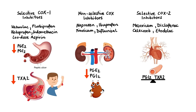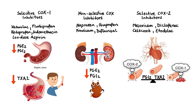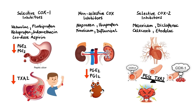Prostacyclin is produced mainly by COX-2 in the endothelium and is responsible for vasodilation and inhibition of platelet activation. On the other hand, thromboxane A2 is produced mainly by COX-1 in platelets and is responsible for vasoconstriction and promotion of platelet aggregation. The problem arises when selective inhibition of COX-2 tips the balance in favor of thromboxane A2 formation, making vasoconstriction and platelet aggregation more likely to occur. This leads to increased risk of cardiovascular events including myocardial infarction and stroke.